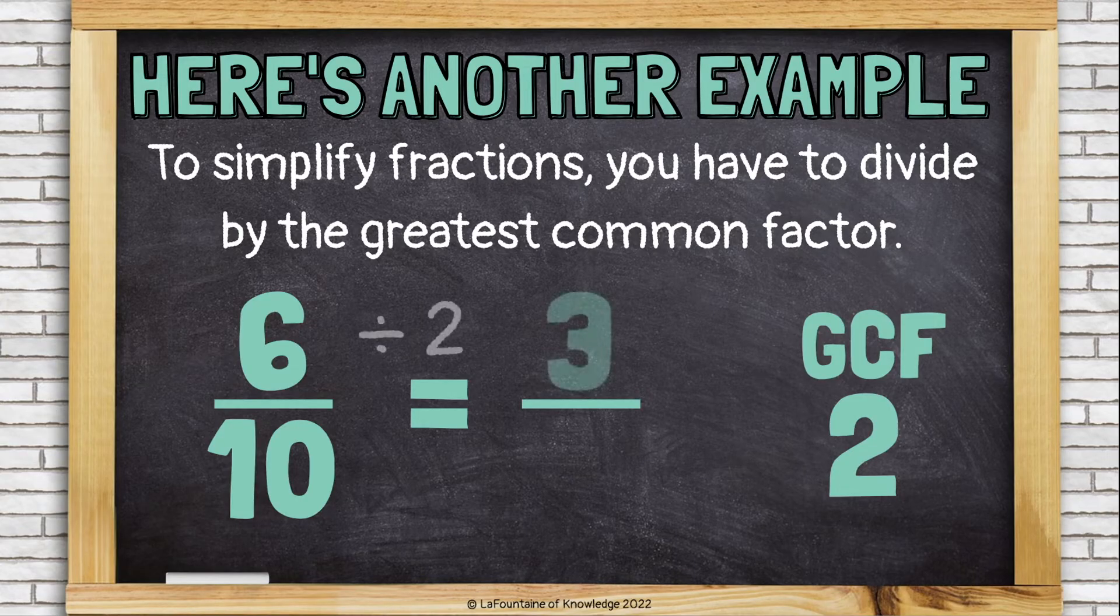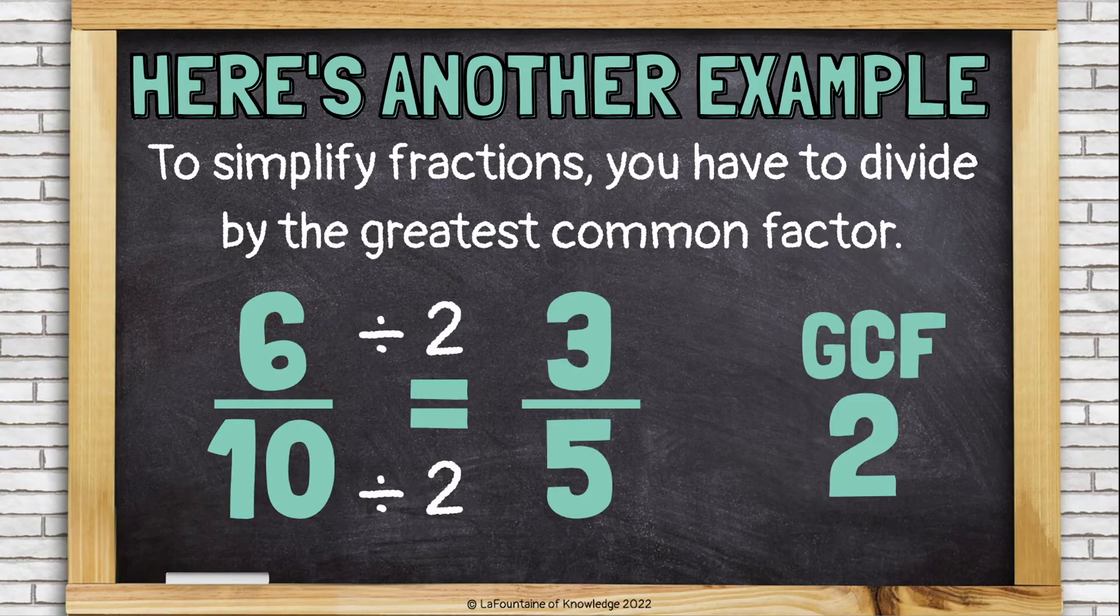Okay. Now we can simplify. We'll just divide both the numerator and the denominator by the greatest common factor. Six-tenths, in simplest form, is three-fifths.